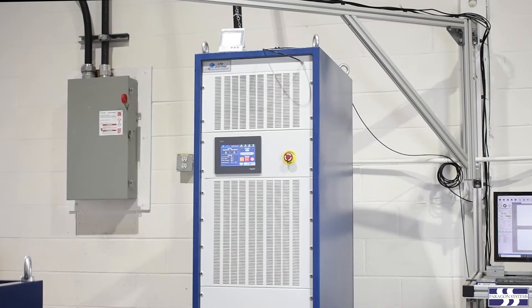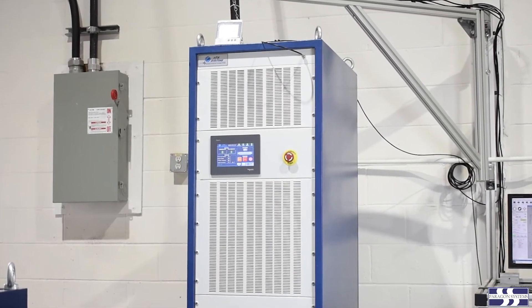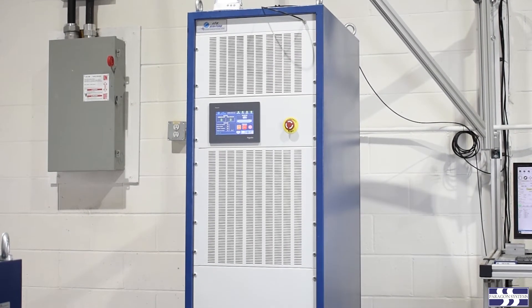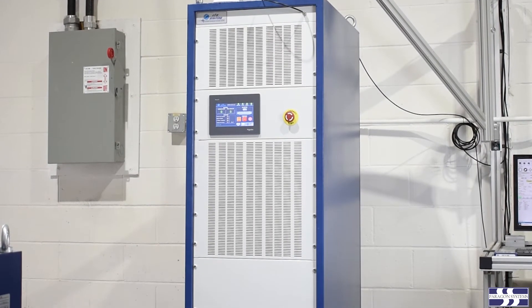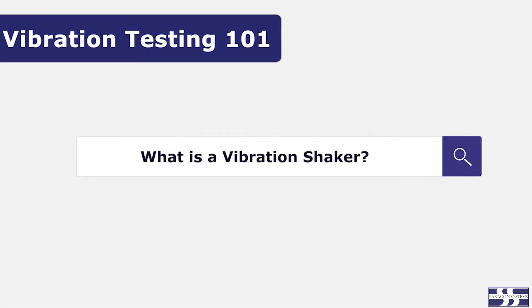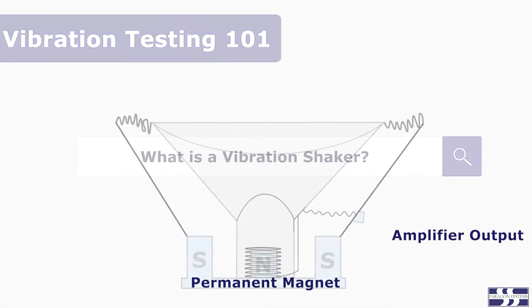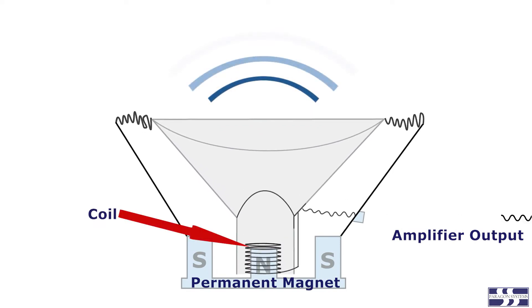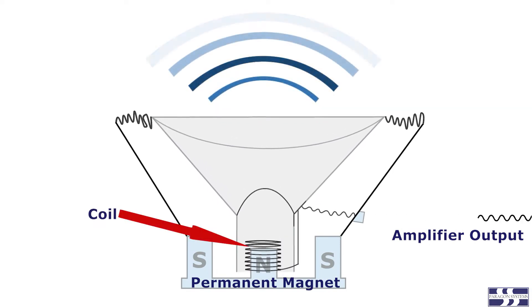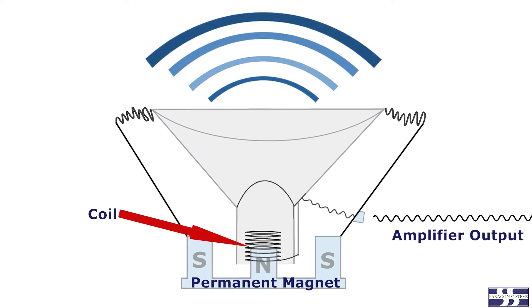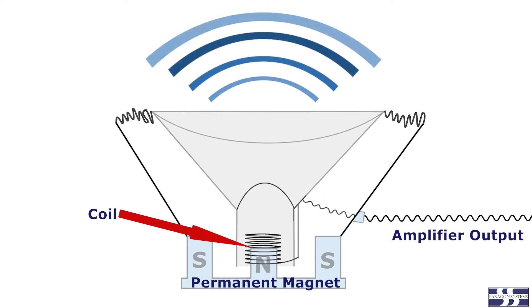There are two important considerations of a Vibration System Amplifier which can affect your vibration test. In our Vibration Actuator video, we explained that the amplifier provides the alternating current to the actuator coil, which is surrounded by an electromagnet. The coil is forced to move back and forth through the principle of induction.